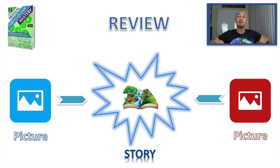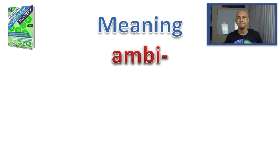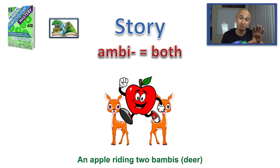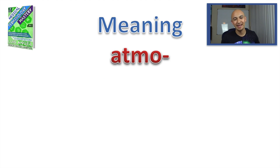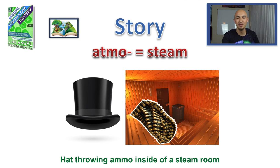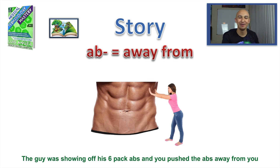Quick review — essential for long-term memory retention. AMBI: picture an apple riding on two Bambis — that means both. ANTI: an ant with tea, and the tea was in front — ANTI means in front of. ATMO: a hat throwing ammo inside of a steam room — ATMO means steam. AB: six-pack abs being pushed away from you — AB means away from. A or AN: an ant had an apple missing its core, so it was without its core — A or AN means without.